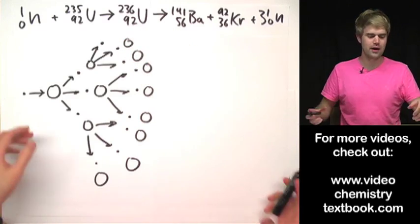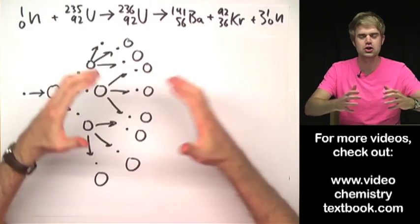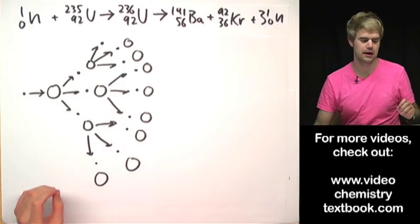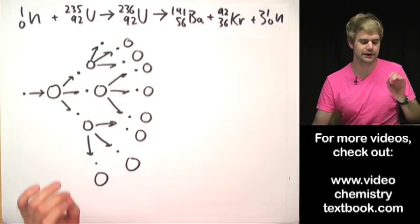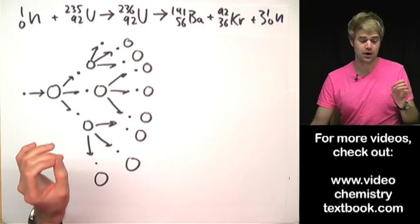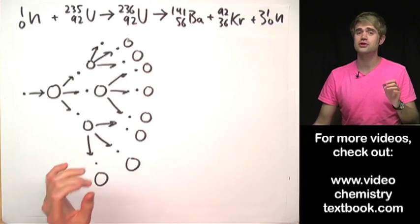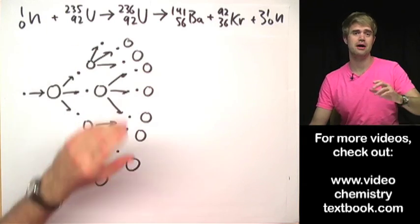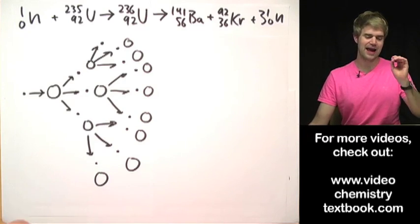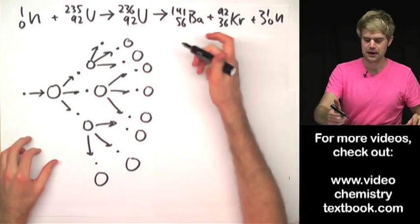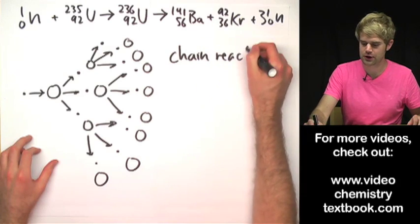And each one of these neutrons can split a new uranium atom. I'm not going to draw this all the way but you can see that very quickly we can be splitting tons and tons of atoms. Now each time we split one of these atoms it releases a little bit of energy, but when we split a whole ton of them, that's when we start releasing tremendous amounts of energy, like nuclear bomb amounts of energy.